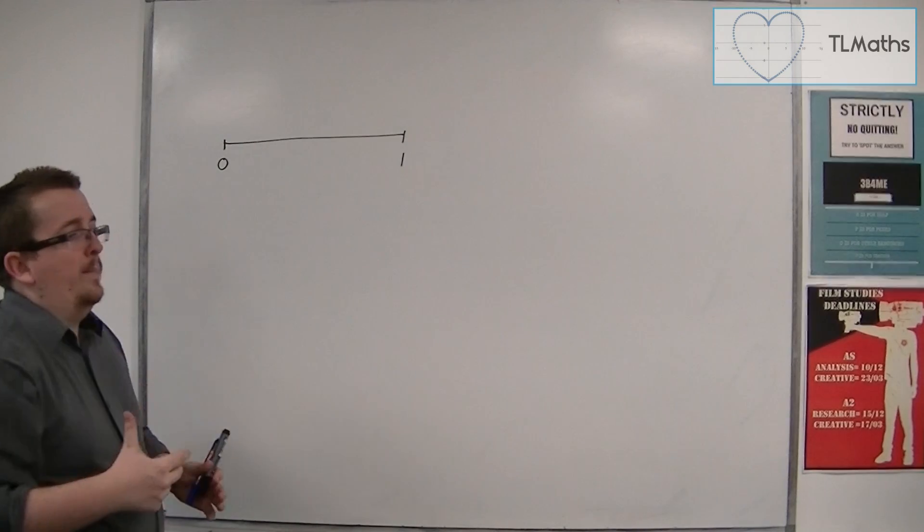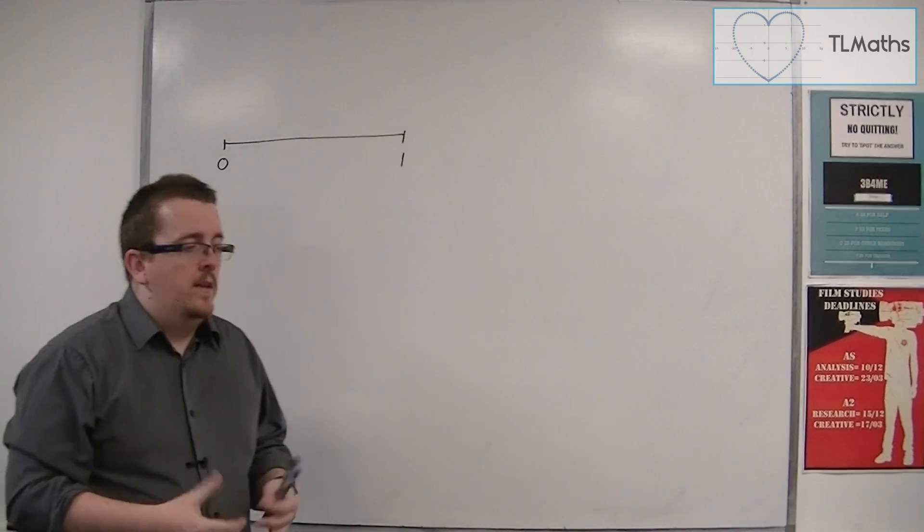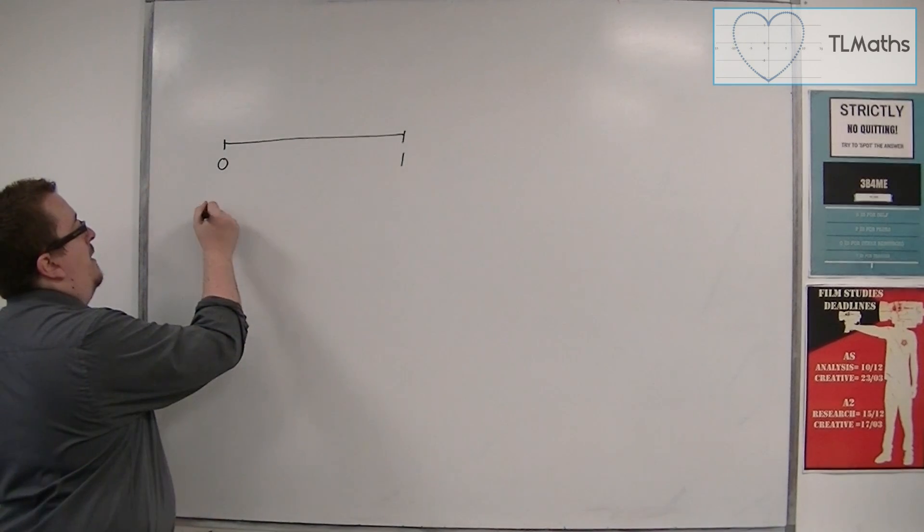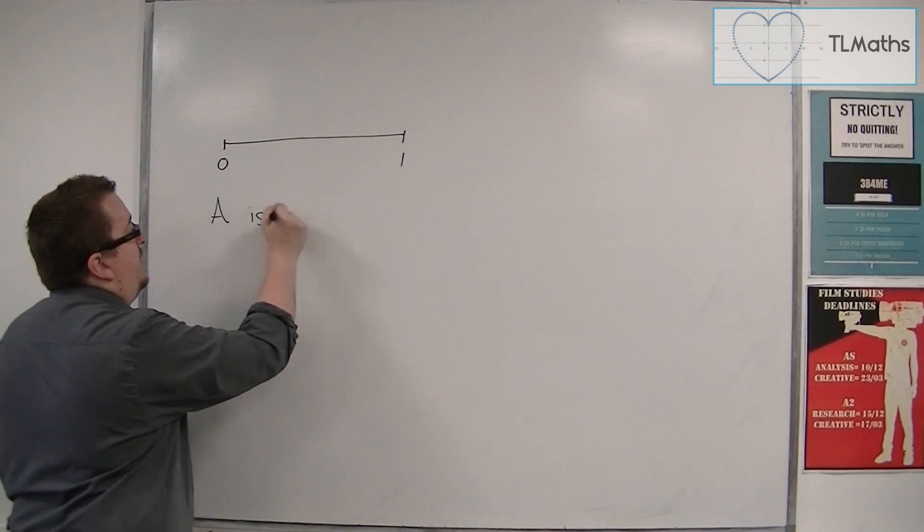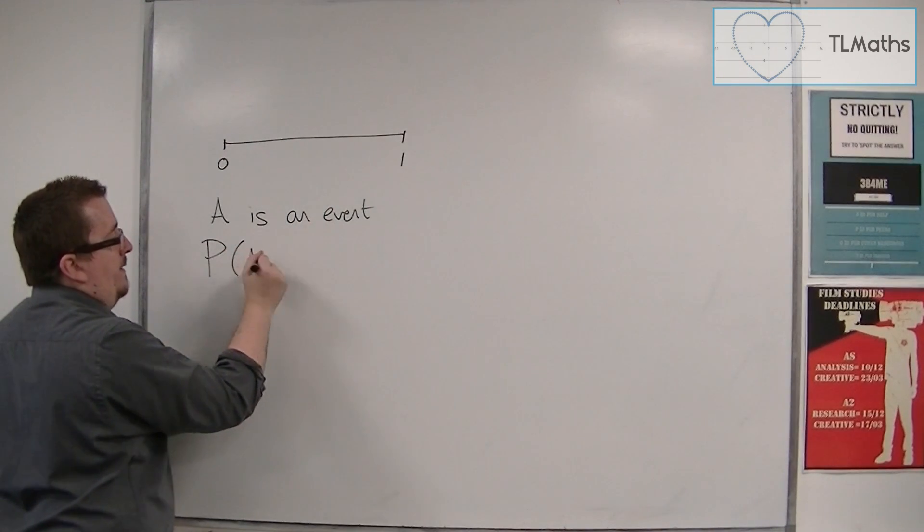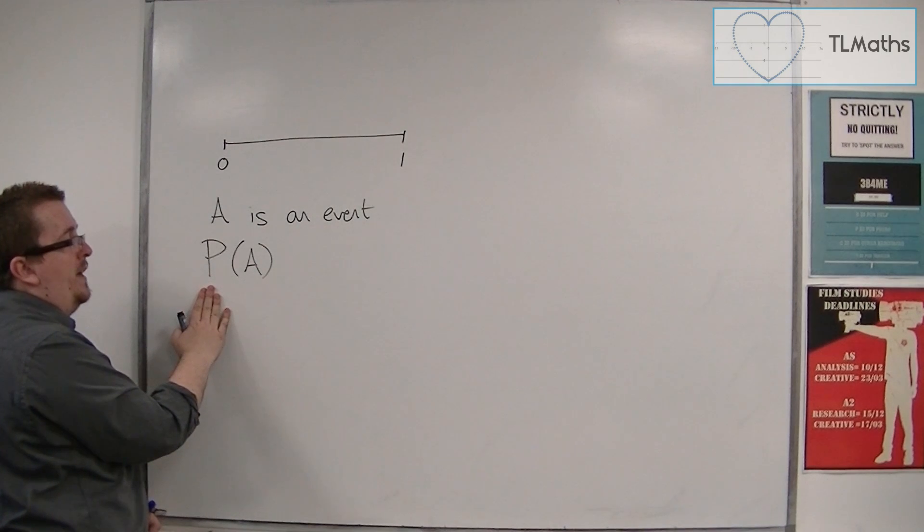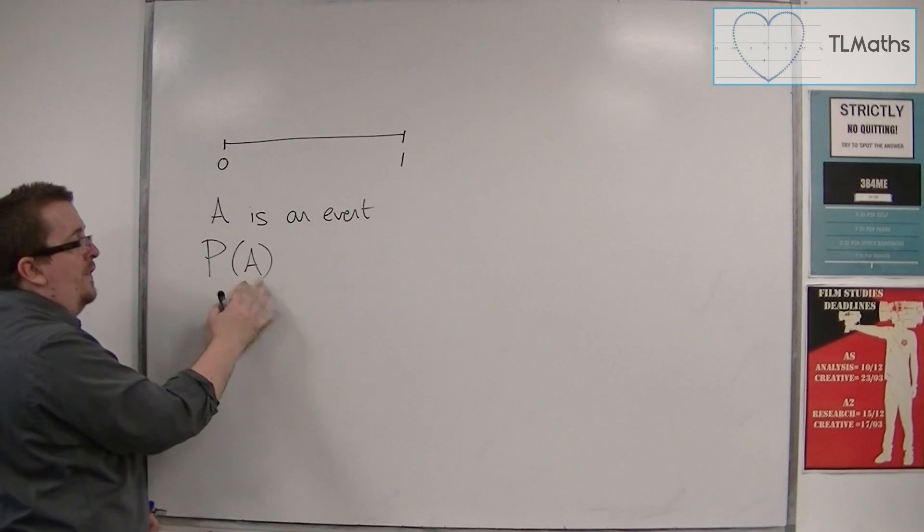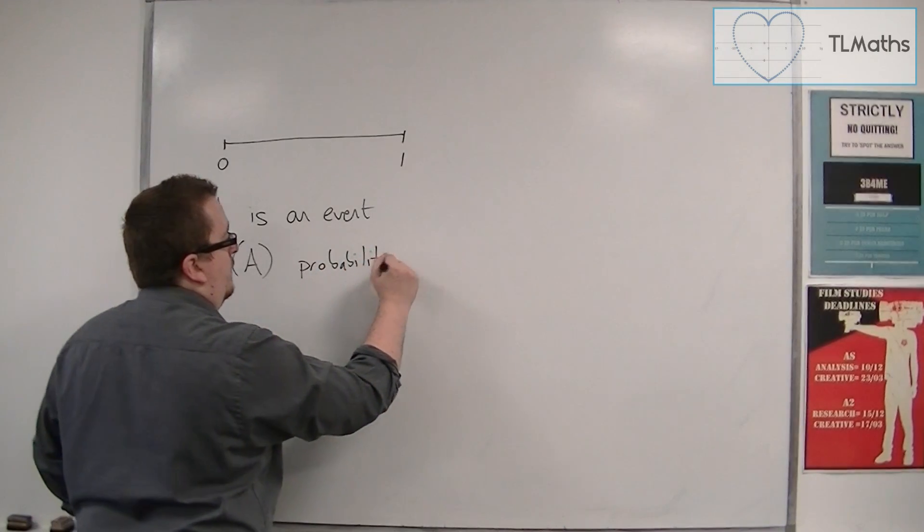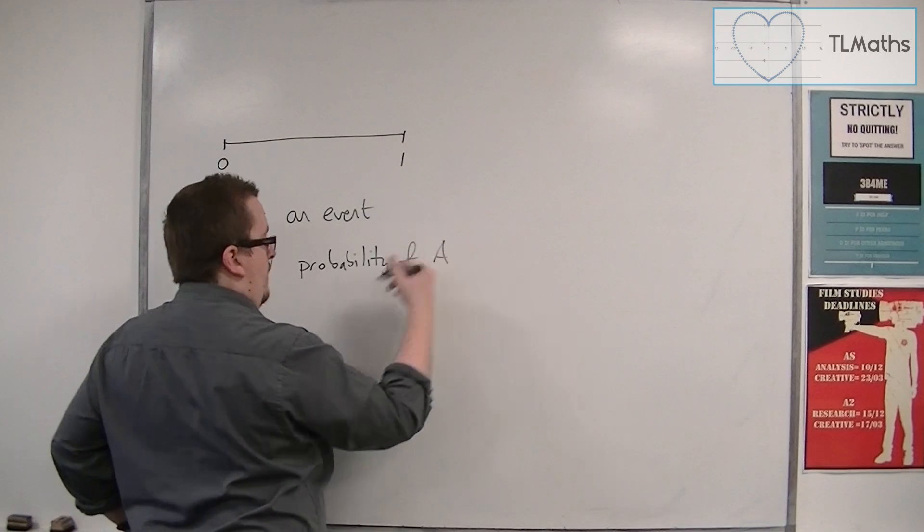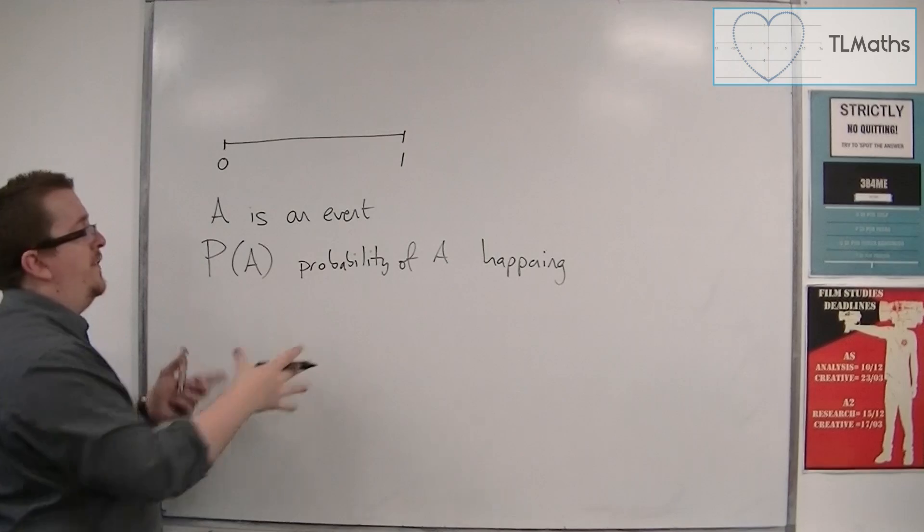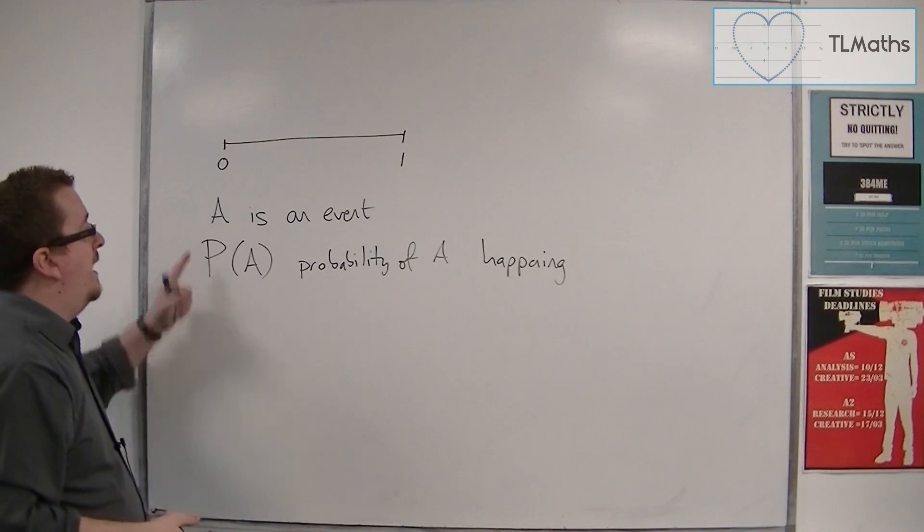So when we're talking about a probability, then in a lot of cases we're talking about actual events. So if A is an event, then we're going to write the P of A. So capital P for probability of A means the probability of A happening. So P of A is the probability of A happening, where A is the event.